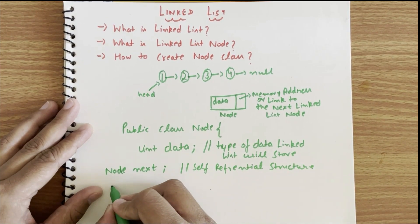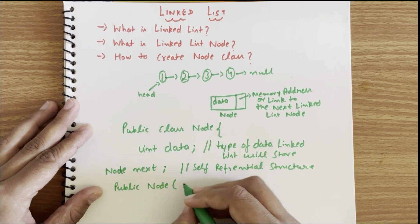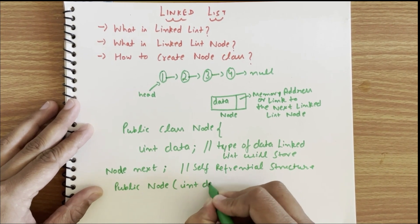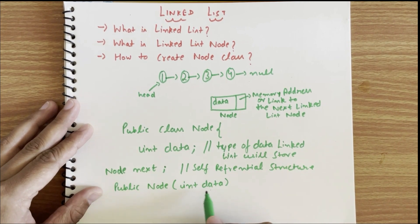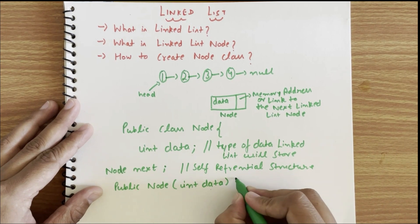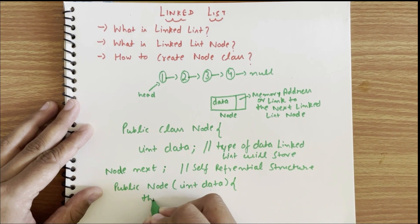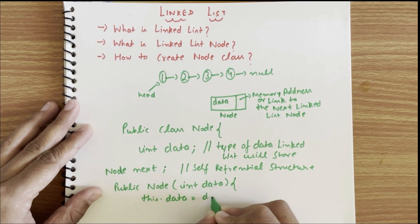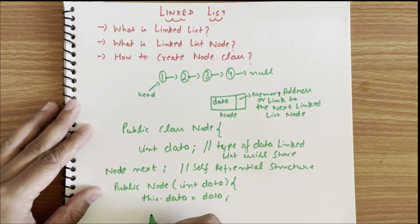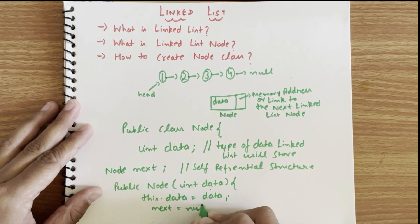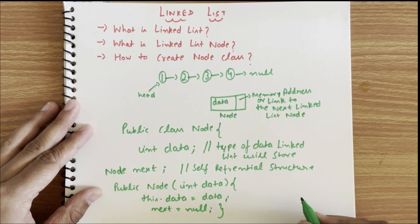Then we declare the constructor: public Node, and our constructor will take the data we want to store into our linked list nodes. Whenever we instantiate this class, we will send the data we want to store in that particular node. Within the constructor we write: this.data = data. The next = null part is optional because in Java, next will automatically be null by default.